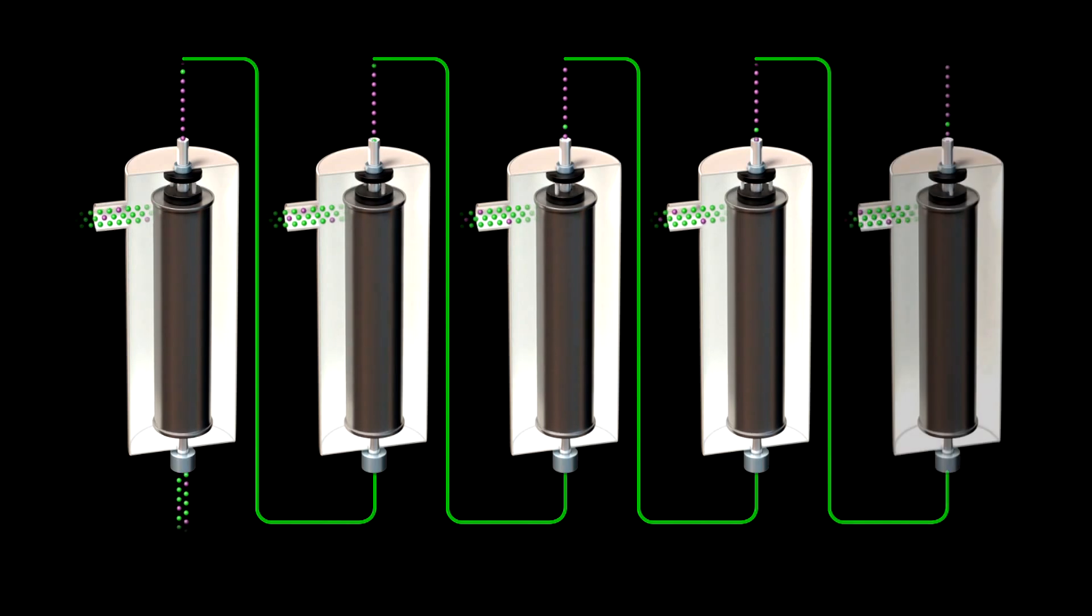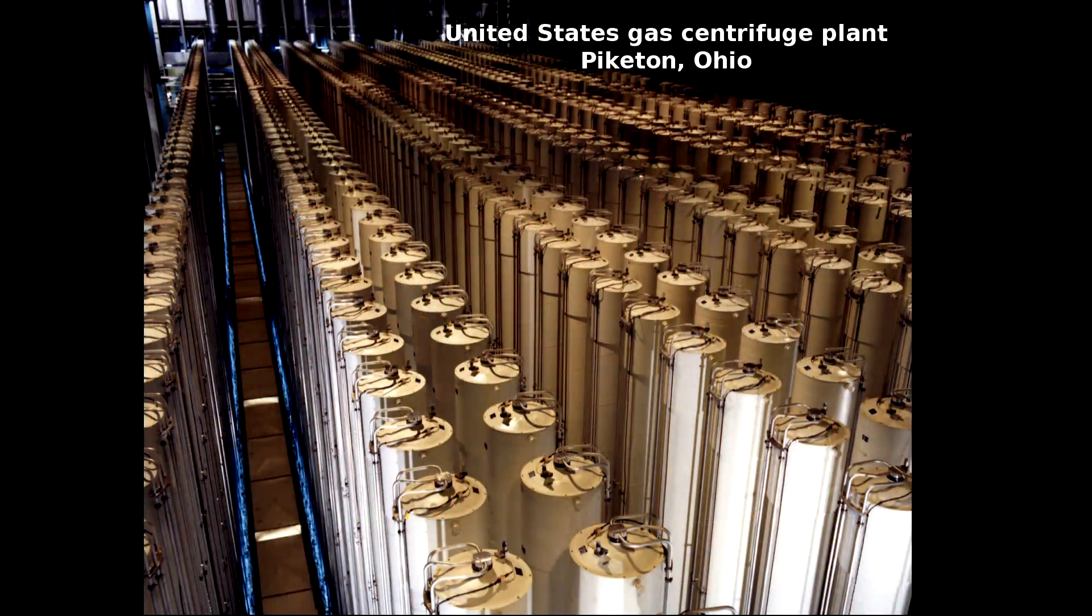The amount of separation is exaggerated here. In an actual centrifuge, the amount of enrichment is a fraction of a percent, so a typical plant might have 60,000 centrifuges to enrich natural uranium to 30% U-235.